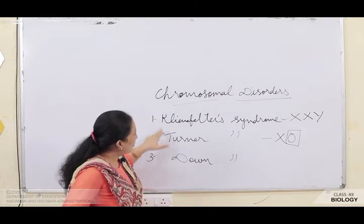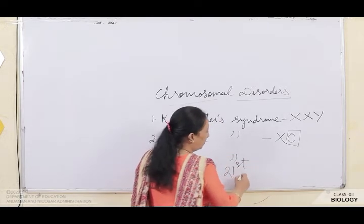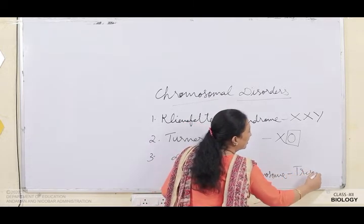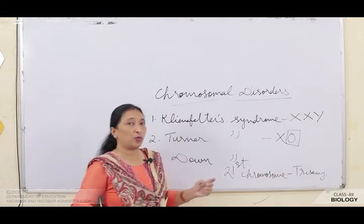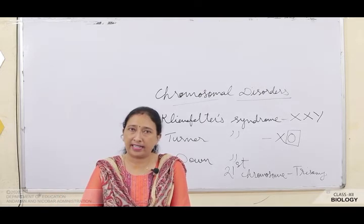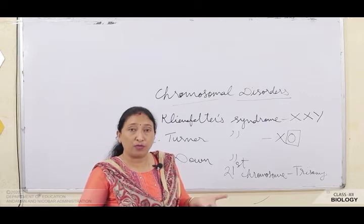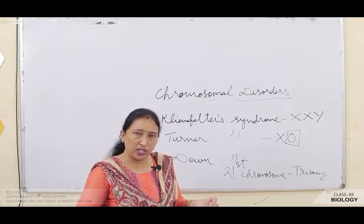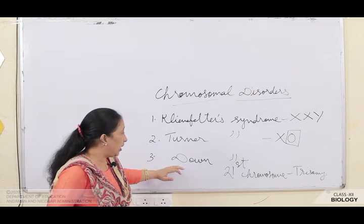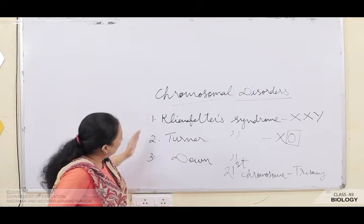Both Klinefelter and Turner syndromes occur in the sex chromosomes. Down syndrome, however, occurs in the 21st chromosome — it is a trisomy, meaning one extra chromosome is added to the 21st chromosome. It was discovered by scientist Langdon Down, hence the name. Children affected by Down syndrome will have a furrowed tongue, broad forehead, mental retardation, partially open mouth, and palm creases. Intelligence is very low.